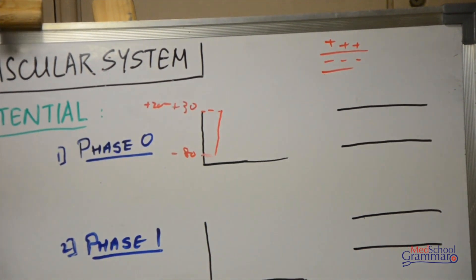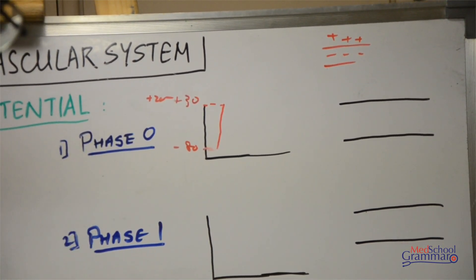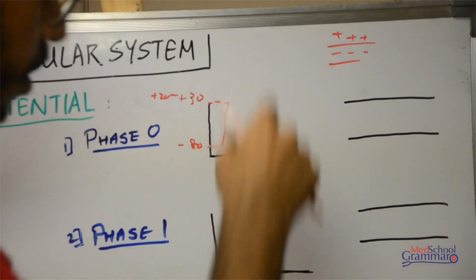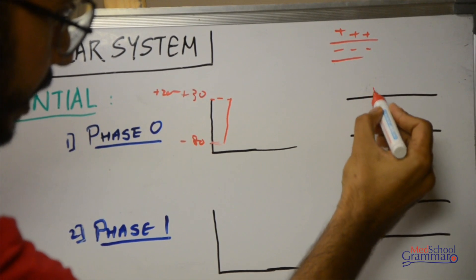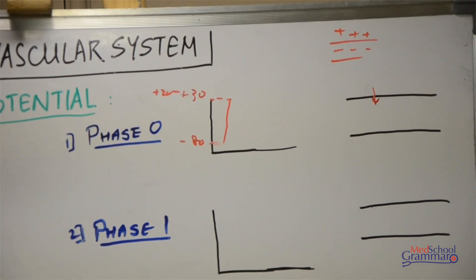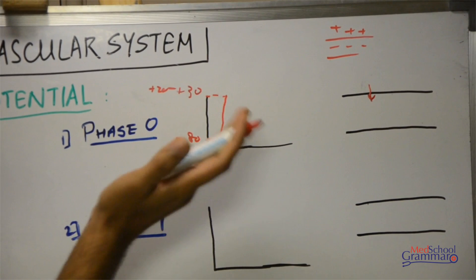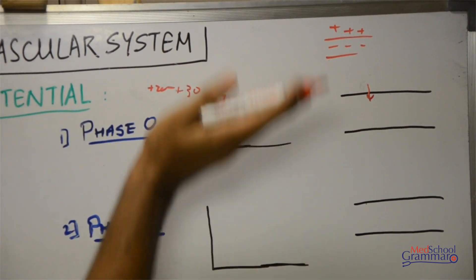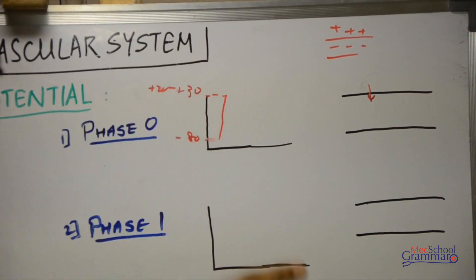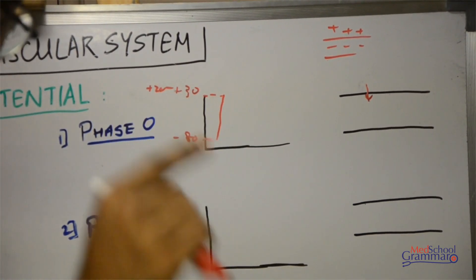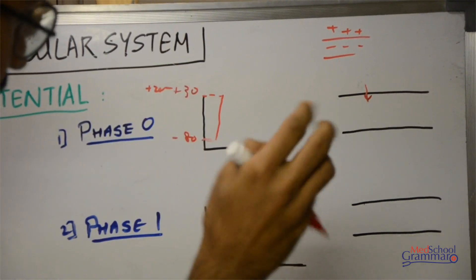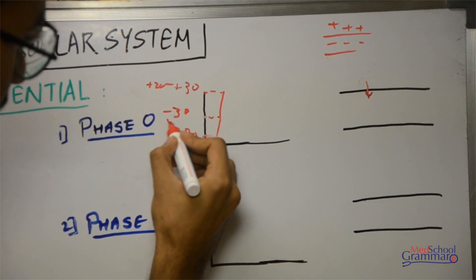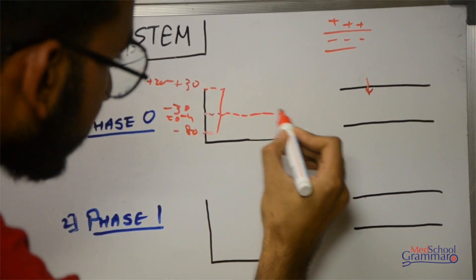Normally at rest, insides are negative and outsides are positive. When the impulse comes from the SA node — no external stimulus is required in a beating heart — it increases sodium permeability and sodium starts moving in. The potential slowly rises from minus 80 millivolts towards the positive side. Initially there is sodium influx through the opening of voltage-gated sodium channels.